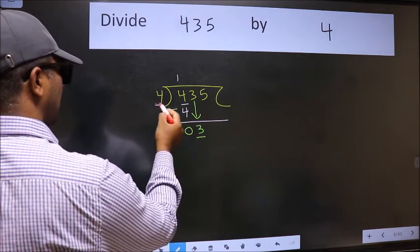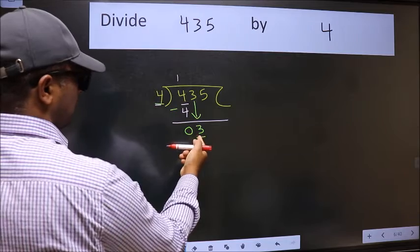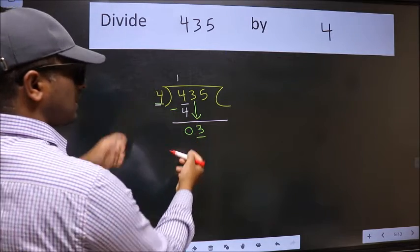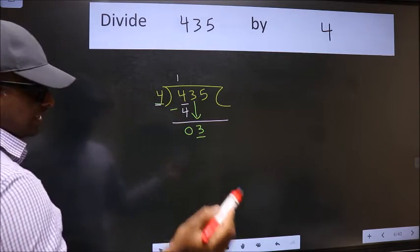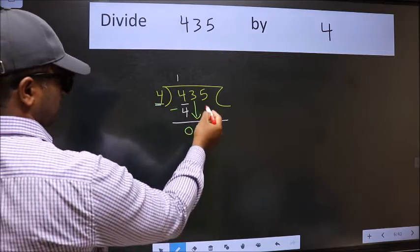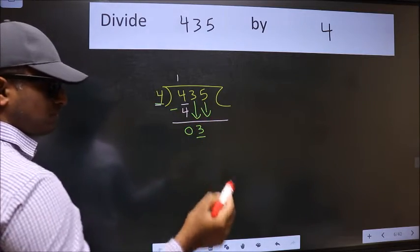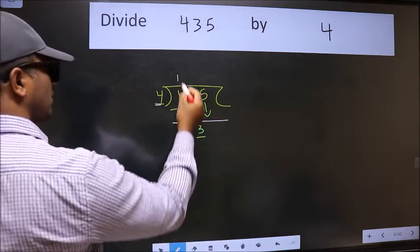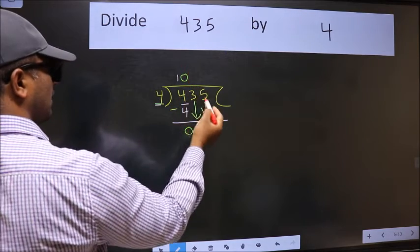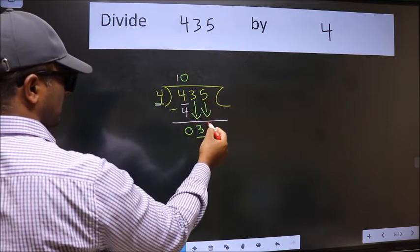Now here we have 3 and here 4. 3 is smaller than 4, so we should bring down the second number. And the rule to bring down the second number is we should put 0 here. Then only we can bring this number down.